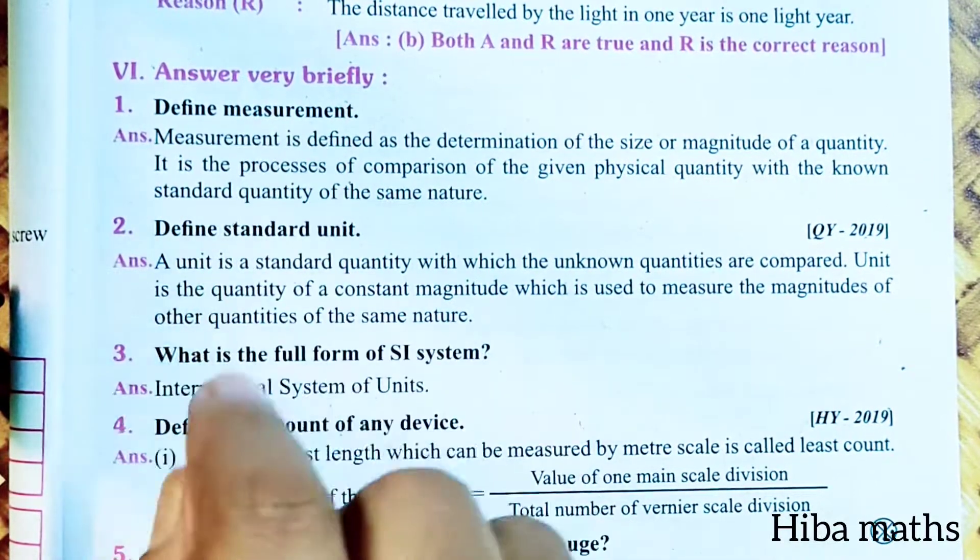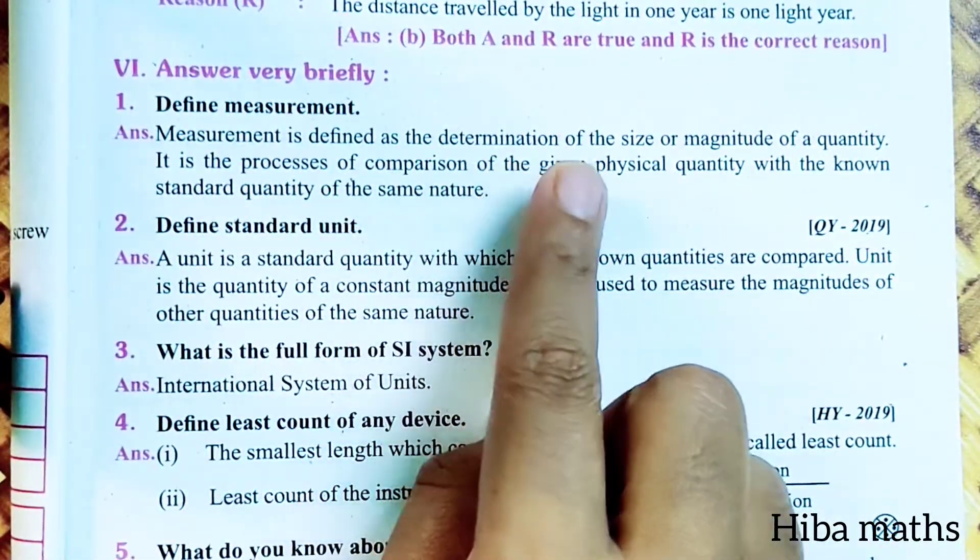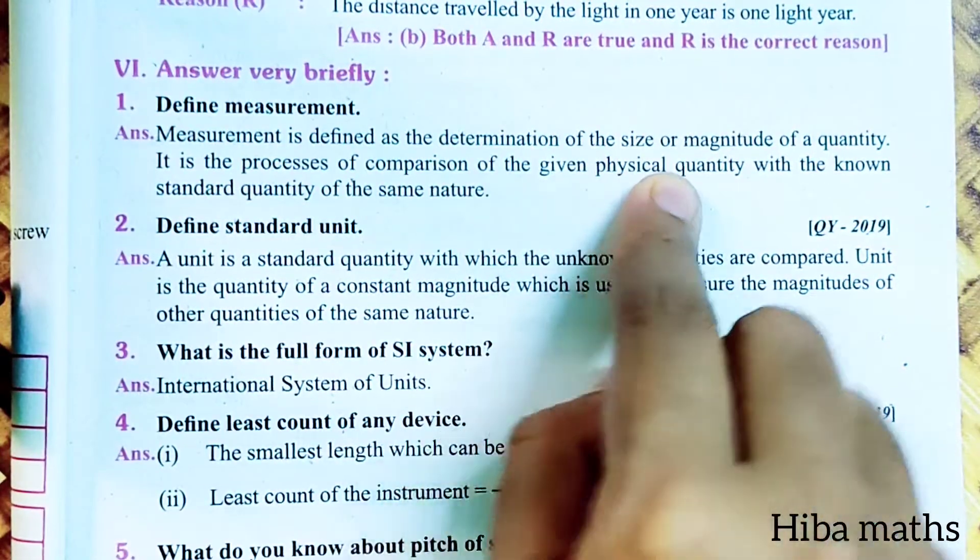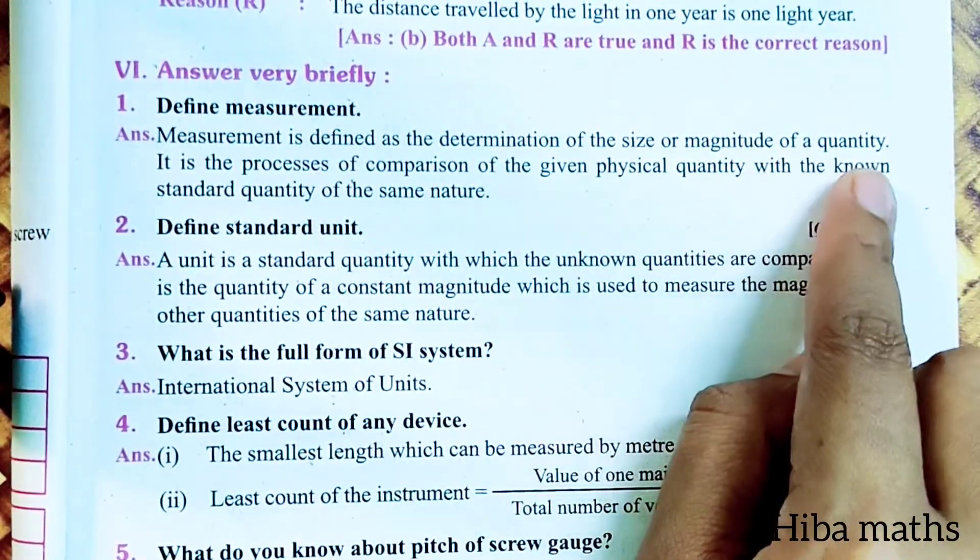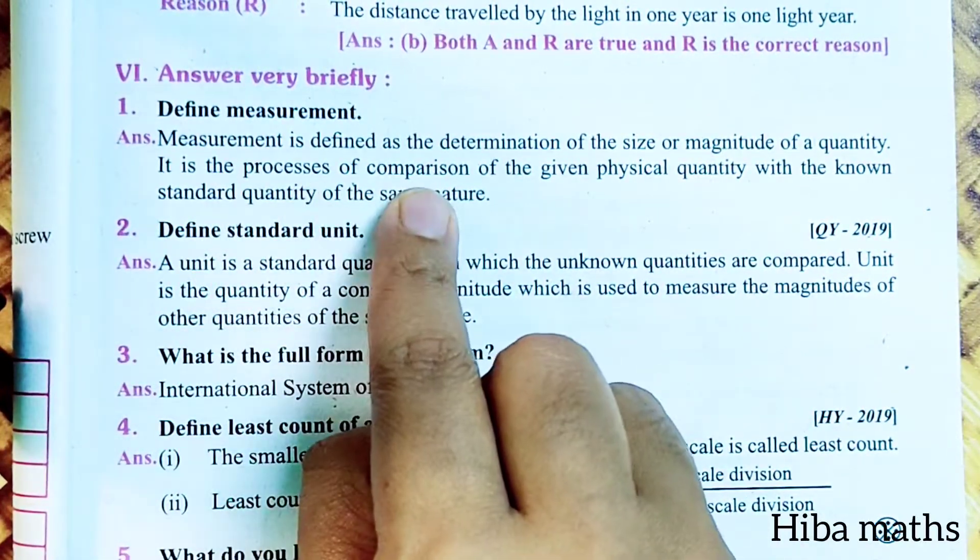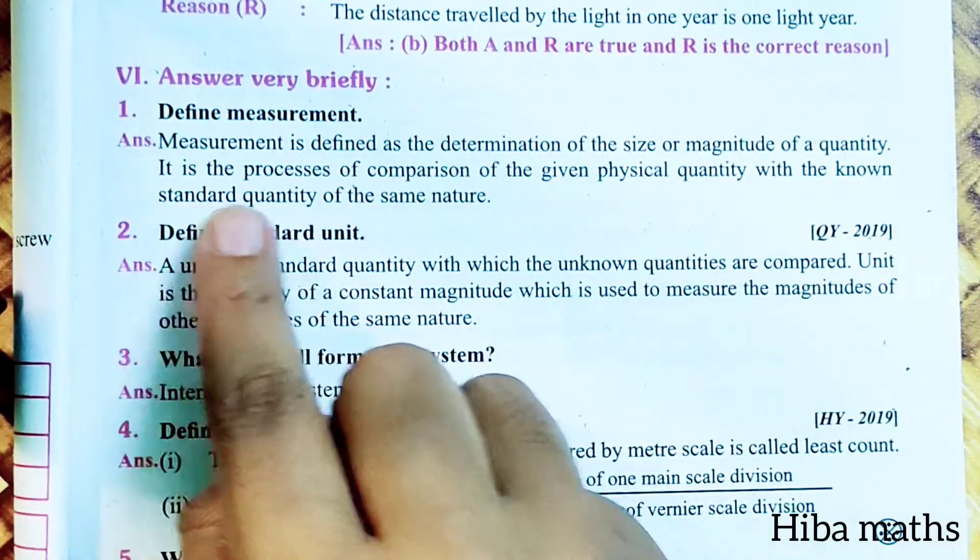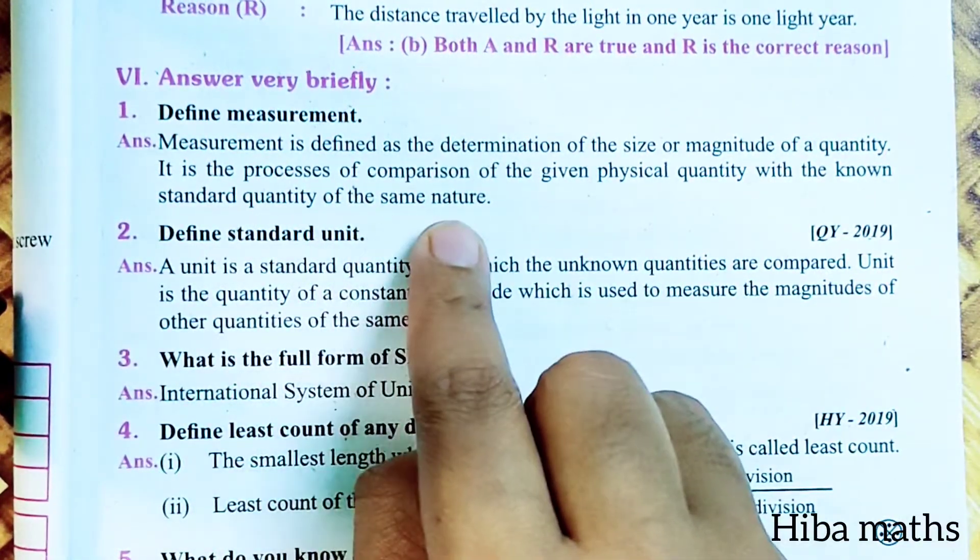First question: define measurement. Measurement is defined as the determination of the size or magnitude of a quantity. It is the process of comparison of the given physical quantity with the known standard quantity of the same nature.